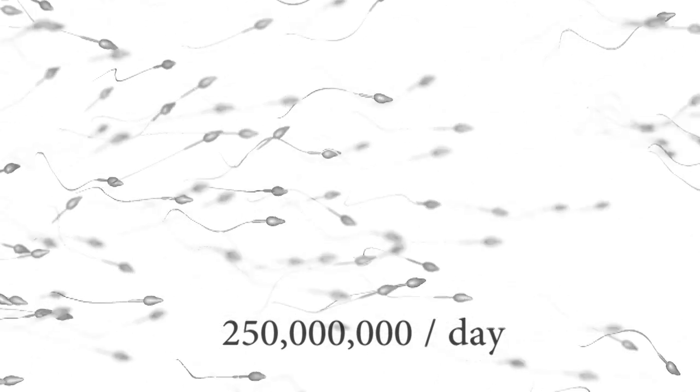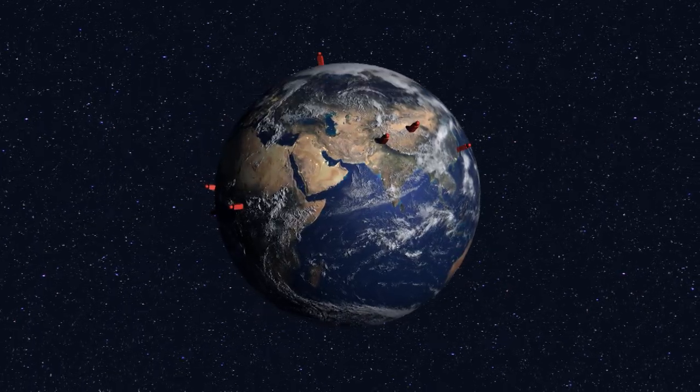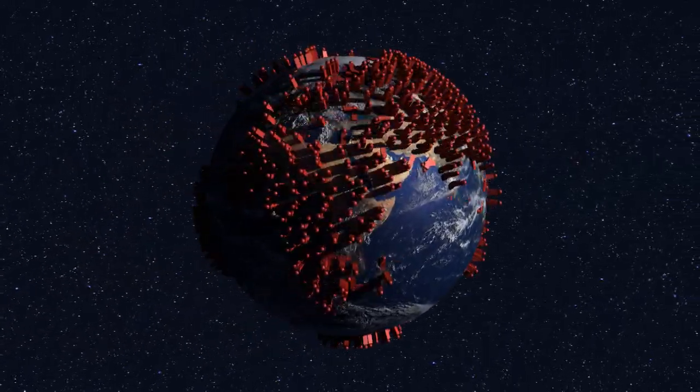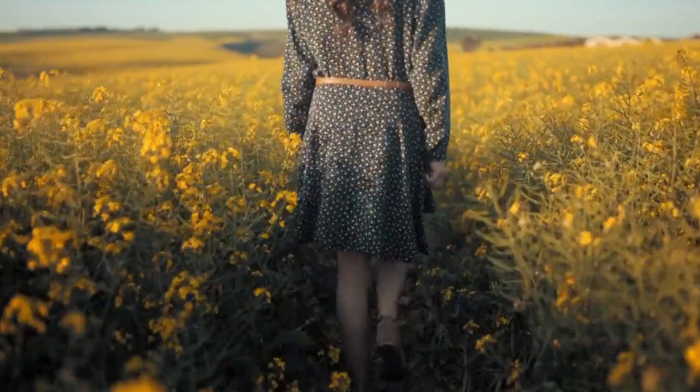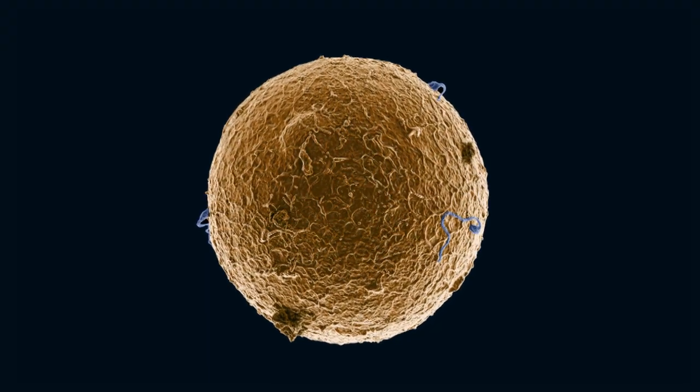The average adult male produces about 200 million sperm cells per day. If he could somehow get each of these sperms into an egg, he could, theoretically speaking, repopulate the globe in a month. In the same month, an adult female releases a single egg. Eggs are very expensive.